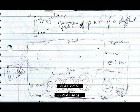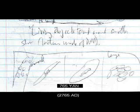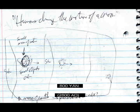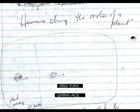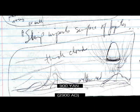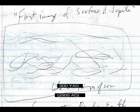Ship reaches Alpha Centauri. First close-up pictures of planets of a different star. Living objects found around another star — bacteria made of DNA. Humans change the motion of a moon. Humans change the motion of a planet. Ship impacts Jupiter's surface. First image of the surface of Jupiter.